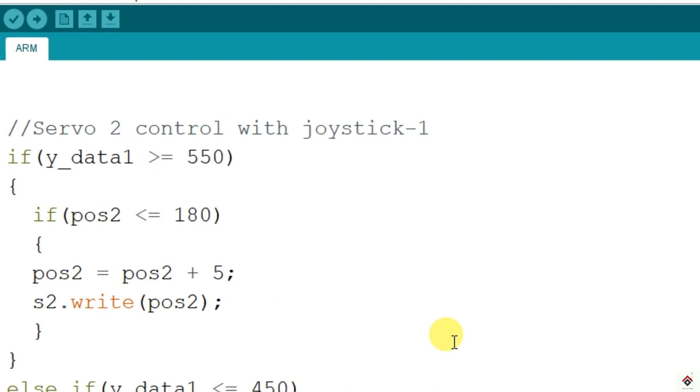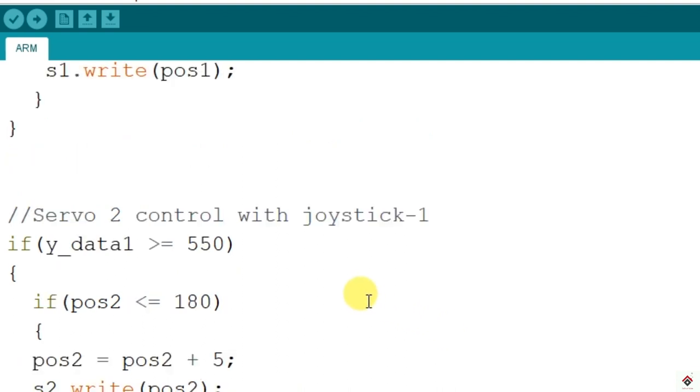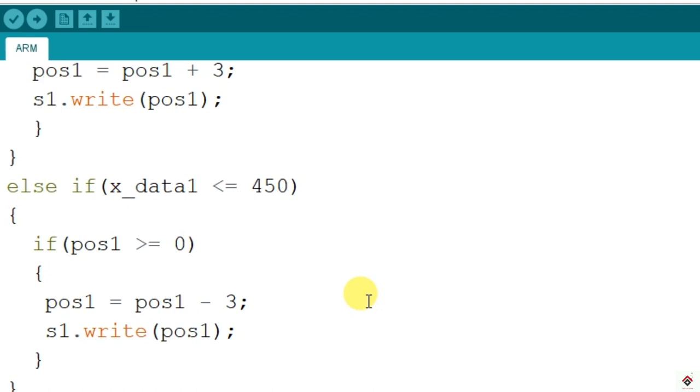So that's it, how the code flow is. You can get the circuit and the code link in the description box. It works, we'll upload this and see how it works.